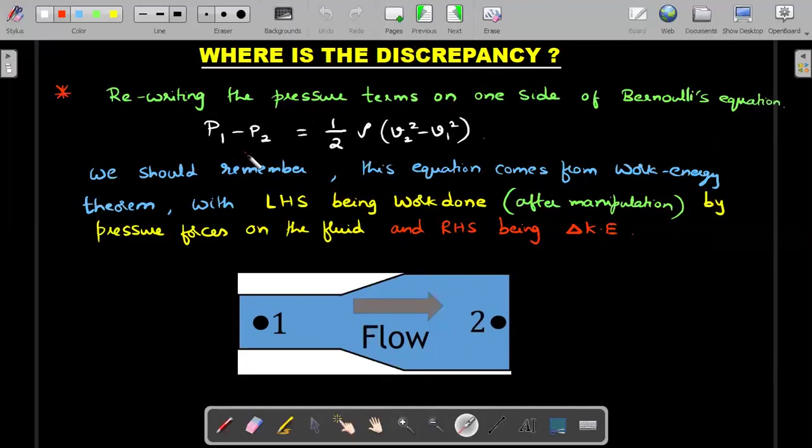Rewriting the pressure terms on one side of Bernoulli's equation from the previous page, I brought all pressure terms on one side and velocity terms on the other. This is with respect to the ground frame or frame of the tube. We should remember this equation comes from work energy theorem, with LHS being manipulated from work done term. Remember W_all = Δ KE. When you write the work done part when manipulated, it becomes this pressure difference term by the pressure forces on the liquid, and RHS being Δ KE. The system we take in writing Bernoulli's equation is the fluid system. We don't take the tube as part of our free body diagram.